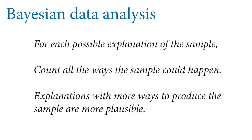Bayesian data analysis is very simple and very humble. It is nothing more than three things: for each possible explanation of the sample, count all the ways the sample could happen given that explanation. Explanations with more ways to produce the sample are more plausible. The Bayesian estimate is an accounting of the relative plausibilities of all possible explanations of the sample. It seems strange, but that's all there is — and it's the best you can possibly do.